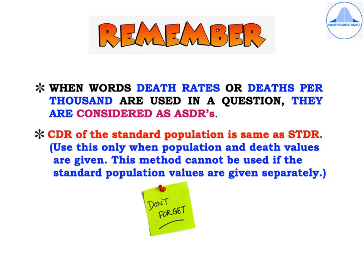STDR is a very important question which is asked for 10 marks in the exam. There are two important points to remember: when the words 'death rates' or 'deaths per thousand' are used in a question, they are considered as ASDRs. Also, the CDR of the standard population will be the same as STDR — but use this only when population and death values are given, not when standard population values are given separately.